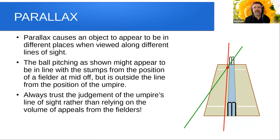Let's look at something a little bit to do with physics that's very important when judging LBW decisions, and that is parallax. Parallax will cause an object to appear to be in different places when viewed along different lines of sight. Let's look at this diagram with the red line and the green line. The red line is the ball's actual trajectory, and the green line is the view of that ball from the position of a fielder at mid-off.